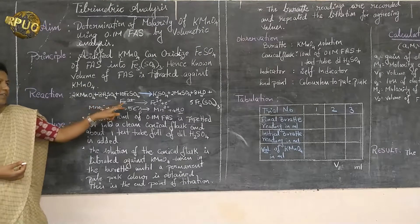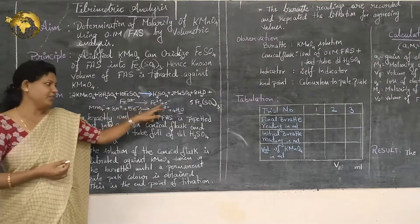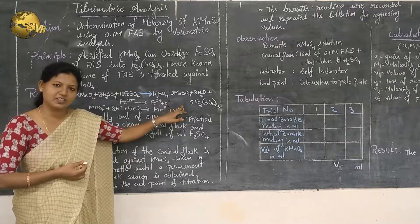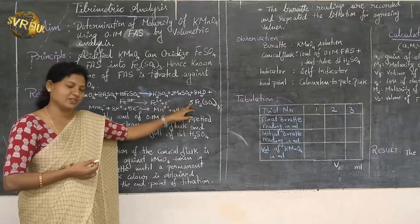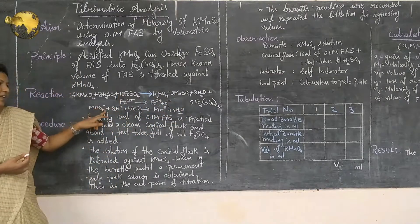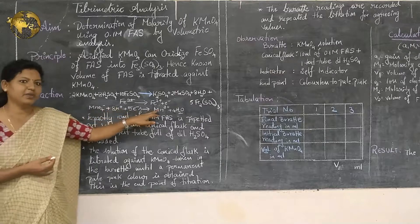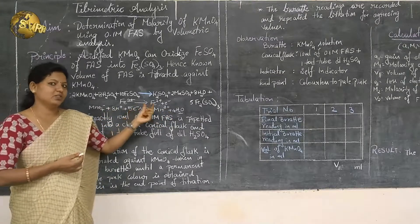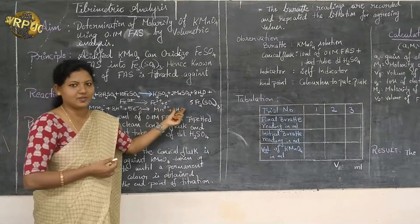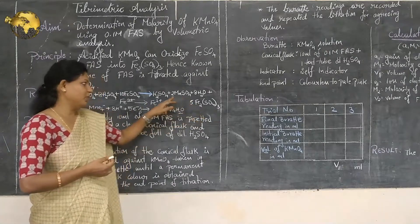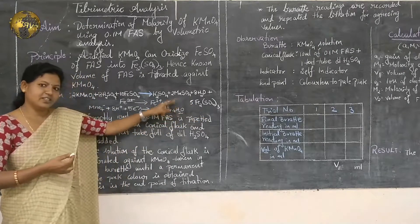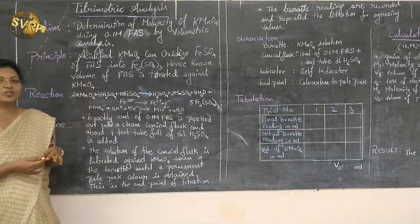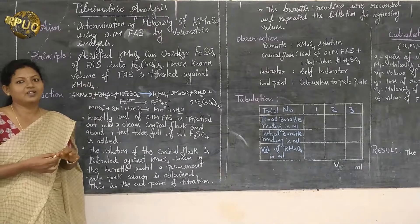In the reaction, the ferrous ion is converting into the ferric ion; loss of electrons is taking place, so this reaction is called oxidation. The permanganate ion is being reduced by gaining electrons, so this reaction is called the reduction reaction. Since both oxidation and reduction reactions are taking place, this titration is also called a redox titration.